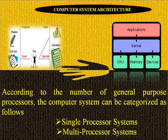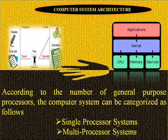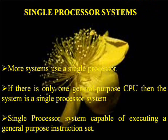Computer System Architecture. According to the number of general purpose processors, the computer system can be categorized as follows: Single Processor System and Multiple Processor System.